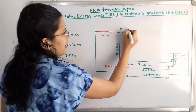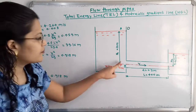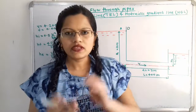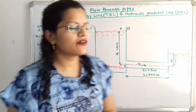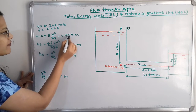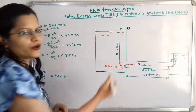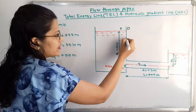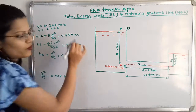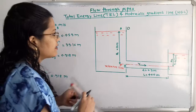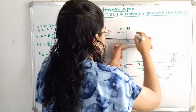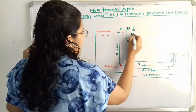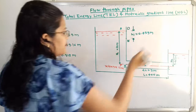We mark point D corresponding to the total energy at point A. As water enters the pipe, there is entrance head loss at point B. The value of HI is 0.459 meters. So the head drops by 0.459 meters and we mark the next point E, which is 0.459 meters vertically below point D.